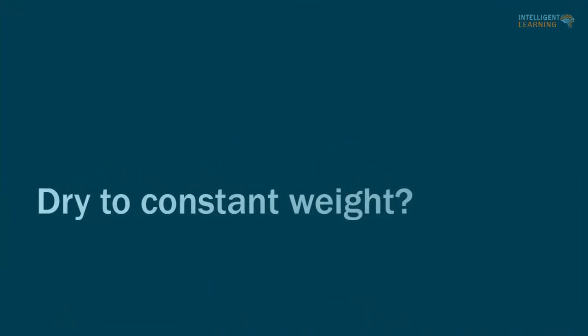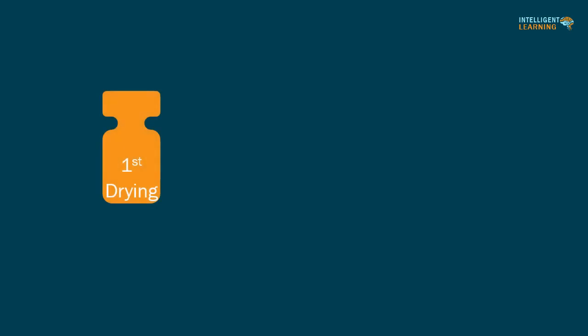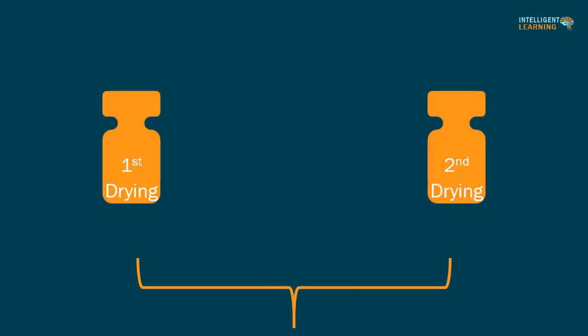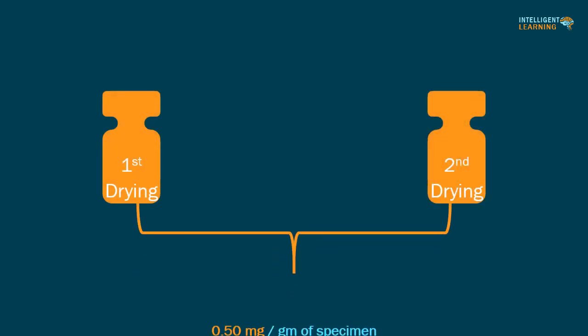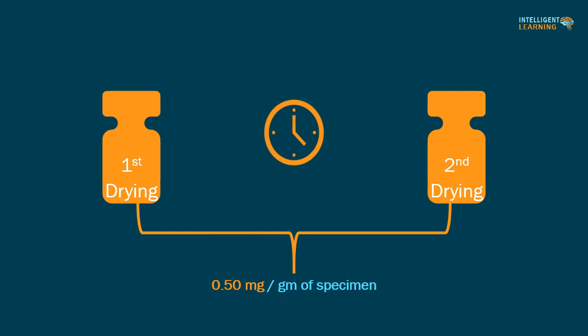Meaning of dry to constant weight: when 'dry to constant weight' is specified in a method of analysis, drying shall be continued until two consecutive weighings do not differ by more than 0.50 milligrams per gram of specimen, where the second weighing follows an additional hour of drying.